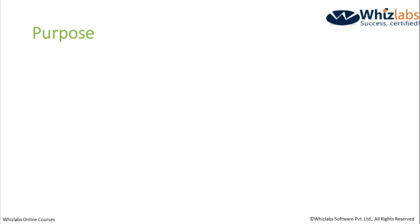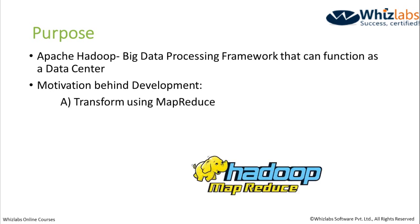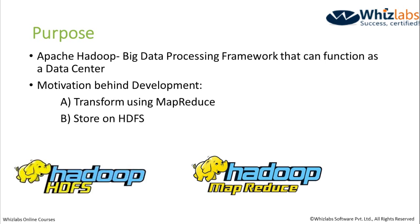Apache Hadoop is a big data processing framework that can serve both as a data center and a processing engine. The main notion behind the development of Apache Hadoop was to enable organizations to use multiple machines running on commodity hardware to perform two main tasks. The first task is to transform the data. The data processing engine used by Hadoop is called MapReduce, and programs are developed in Java using the MapReduce API. After applying your processing logic to transform the data, you can store it on Hadoop's native file system called HDFS. By native, I don't mean Hadoop has independently developed a file system apart from the one running on your system, but instead this is a logical file system used by your data center, which provides a fault-tolerant mechanism for storing your data.